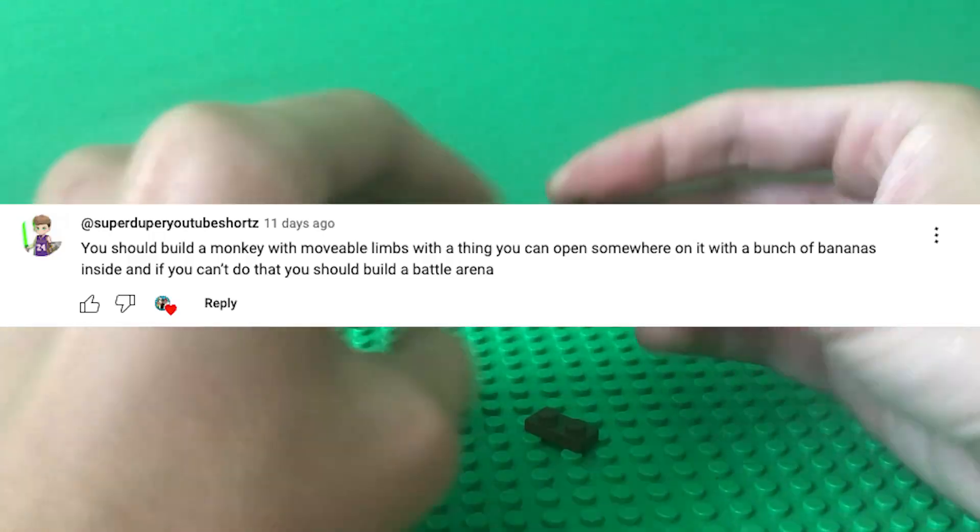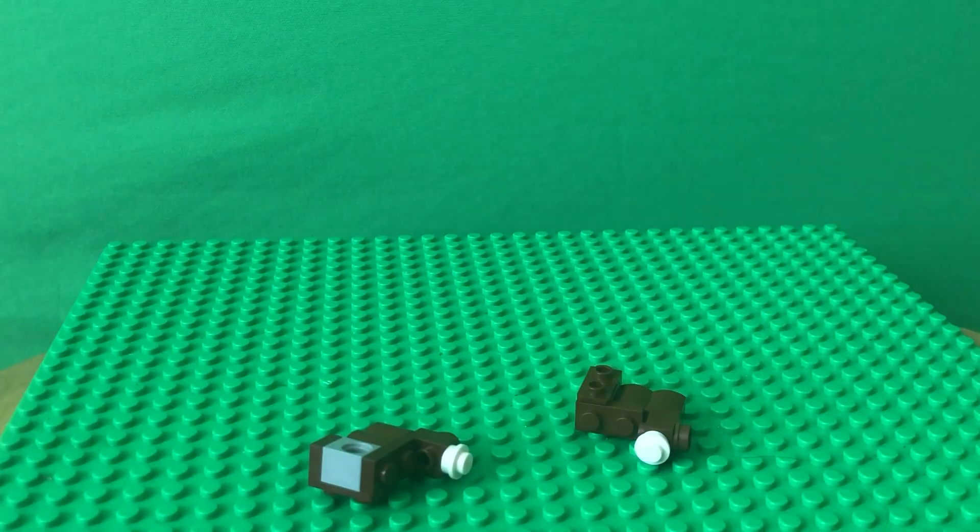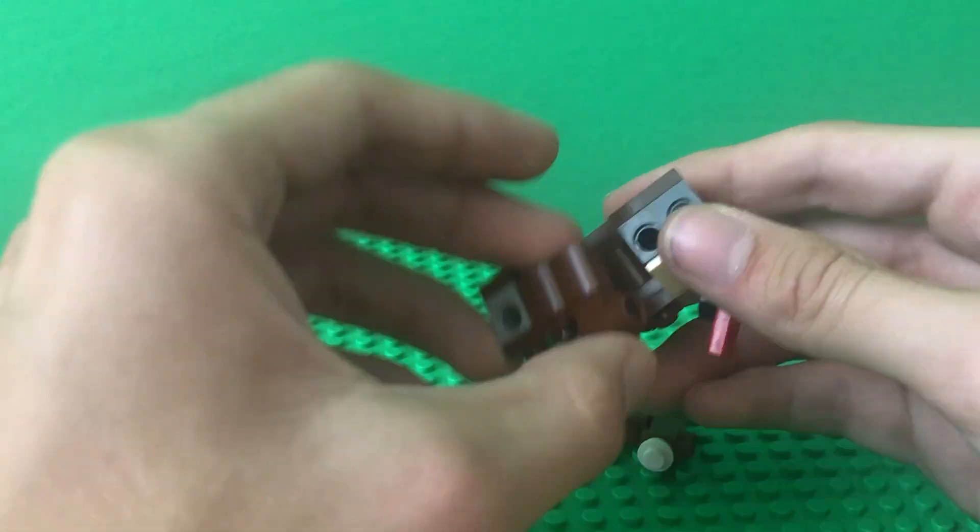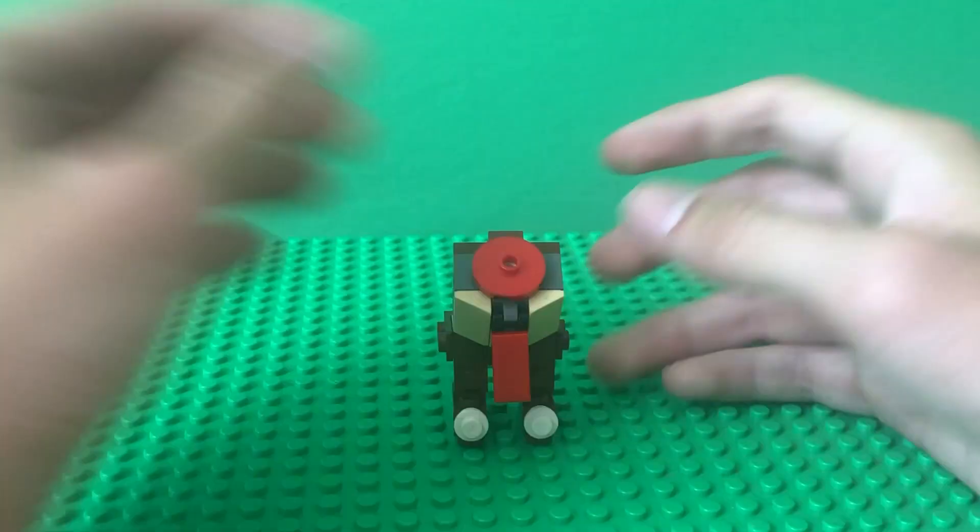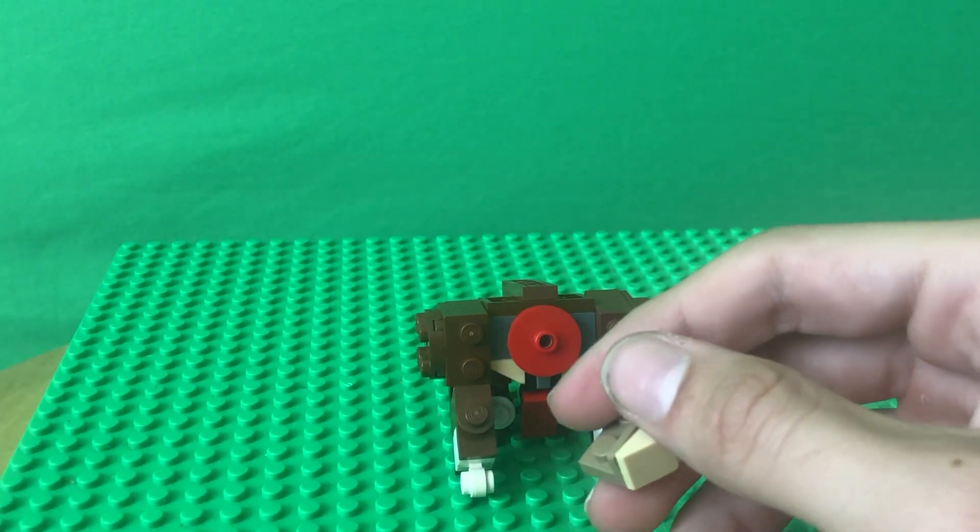SuperDuper YouTube short suggested I build a monkey with poseable arms and legs and has a container somewhere to hold a bunch of bananas. May have forgotten about the banana part, but he also said that if I can't do that, build a battle arena. Yeah, we'll come back to that later.